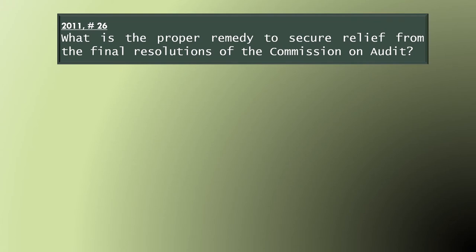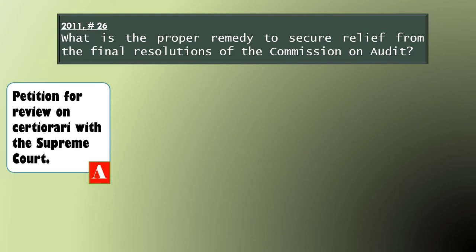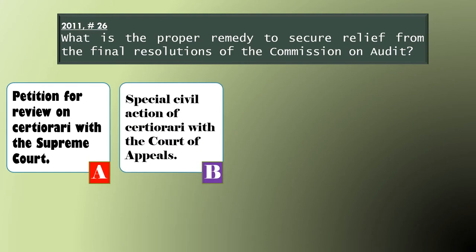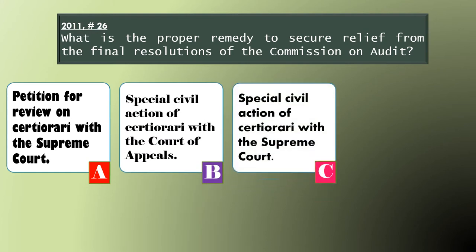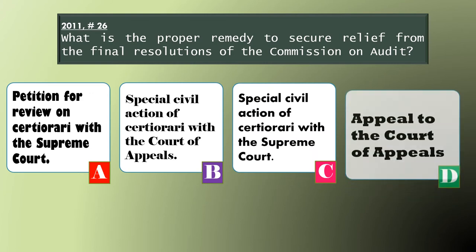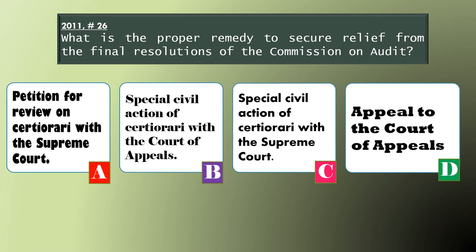This is a 2011 Bar Question No. 26 MCQ: What is the proper remedy if you want to secure relief from the final resolutions of the COA? Choices are: A — Petition for Review on Certiorari with the Supreme Court; B — Special Civil Action of Certiorari with the Court of Appeals; C — Special Civil Action of Certiorari with the Supreme Court; D — Appeal to the Court of Appeals. The answer is Letter C.